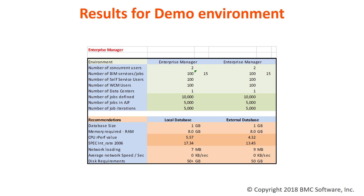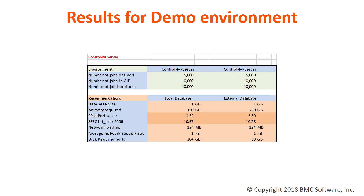Moving on to the next section, which is the Control-M server part. Once again, you can see the assumptions at the top and the values at the bottom. One important note: if the Enterprise Manager and the server are on the same machine, you need to add these values together. For example, memory required for EM was eight gig and server is eight gig, so you're going to need more than eight gig if you put both on the same machine.